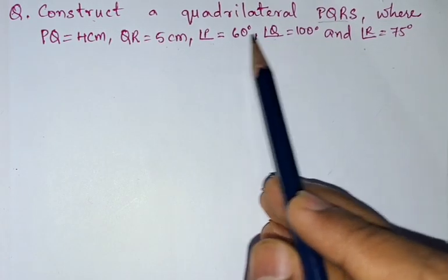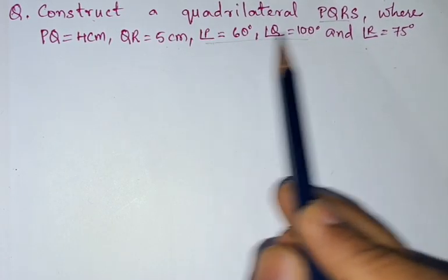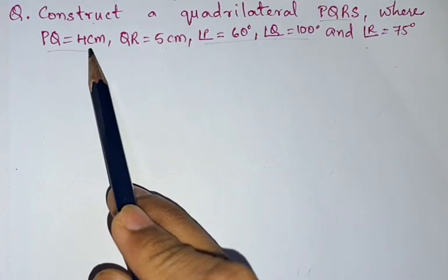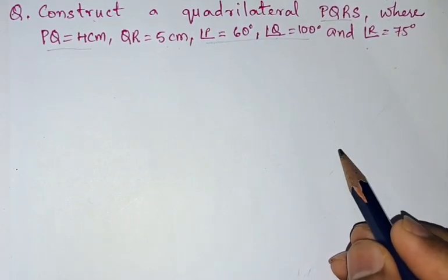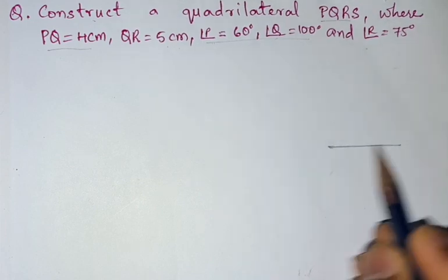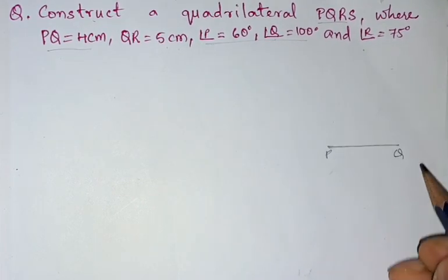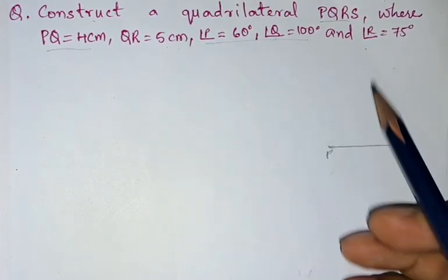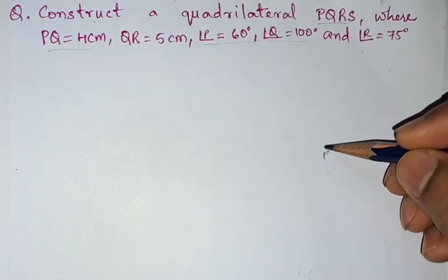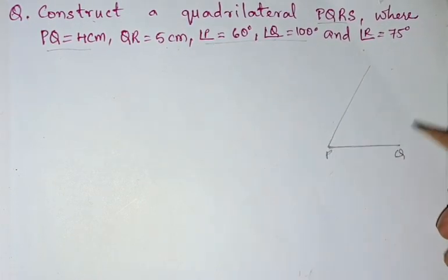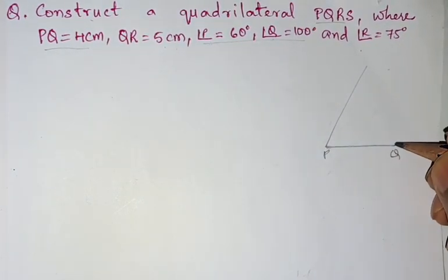We have angle P and angle Q, so we can take PQ as the base. If we take PQ as the base, we will get 60 degrees from P and 100 degrees from Q.